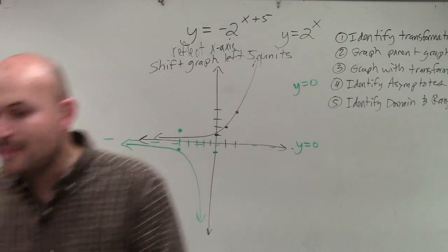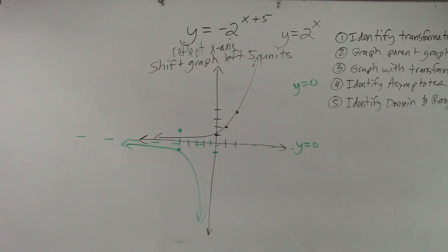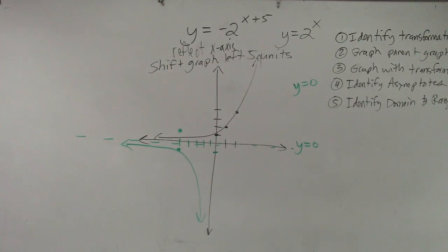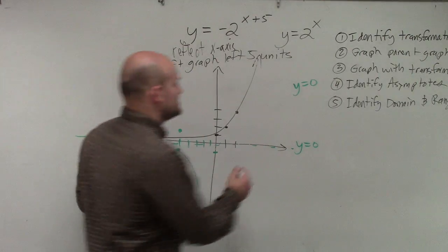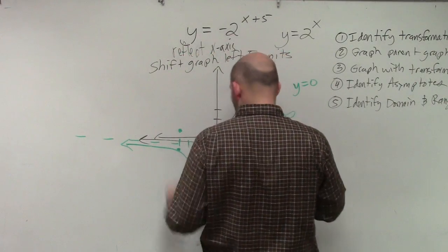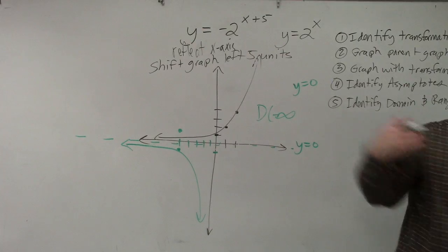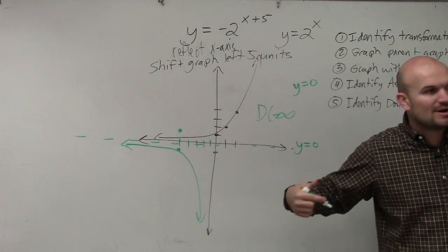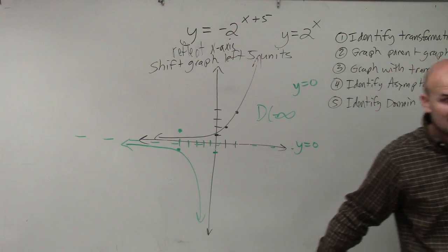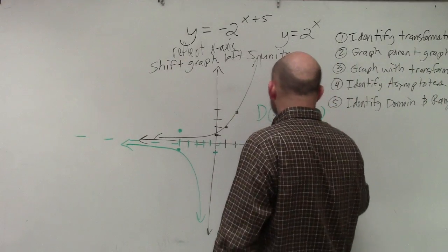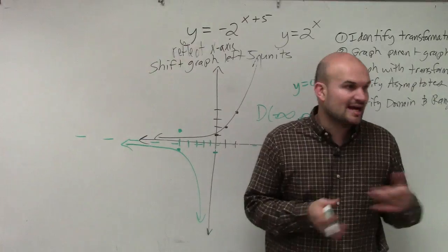Now let's look at the domain and range. Remember, the domain is the set of all x values. When identifying domain, ask how far to the left and right the graph goes. This green graph goes forever to the left — negative infinity — and it keeps going to the right with no restriction. So exponential functions have the same domain as a quadratic: negative infinity to positive infinity.